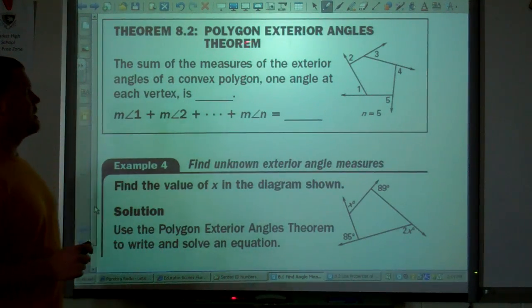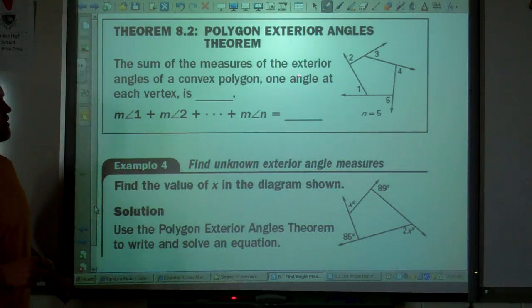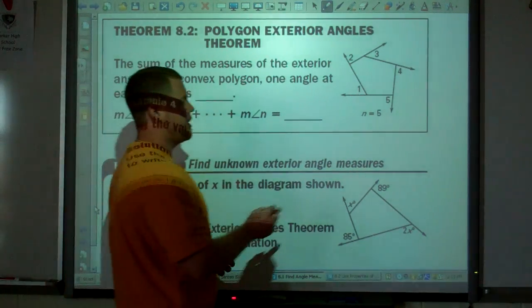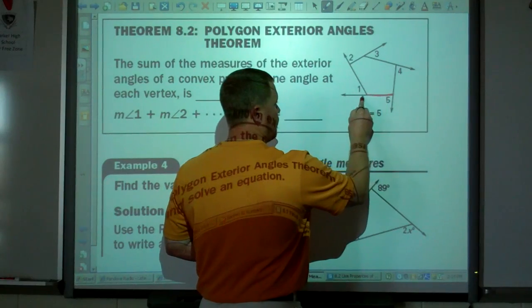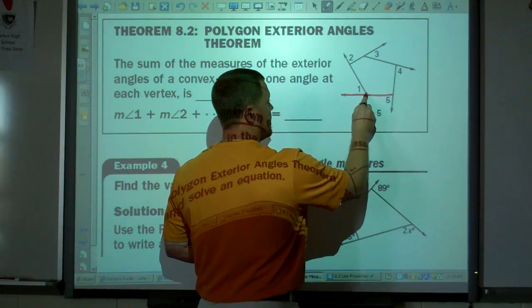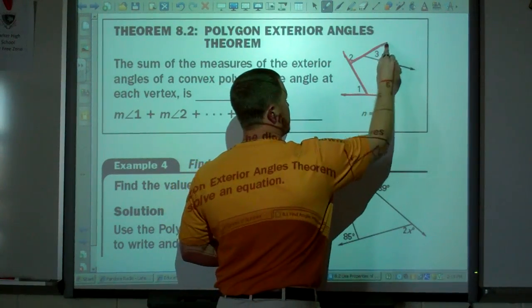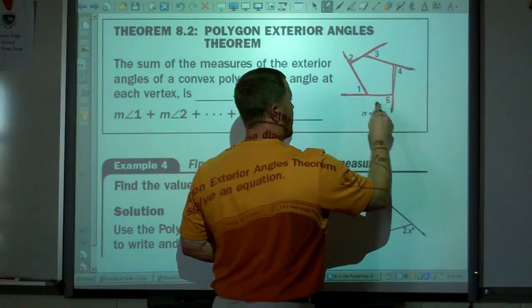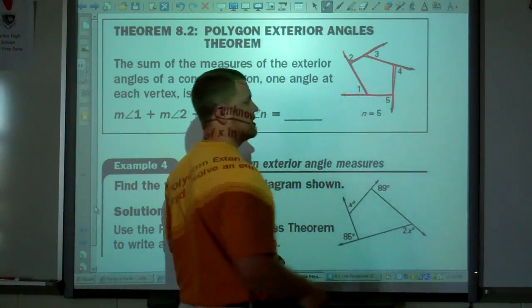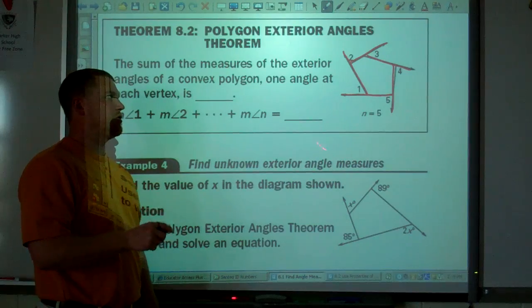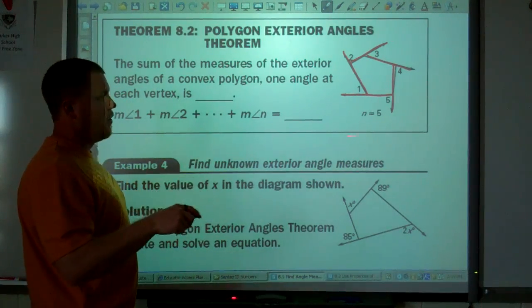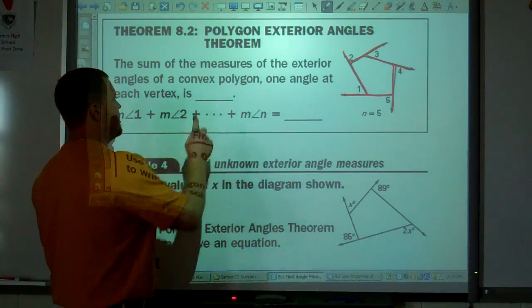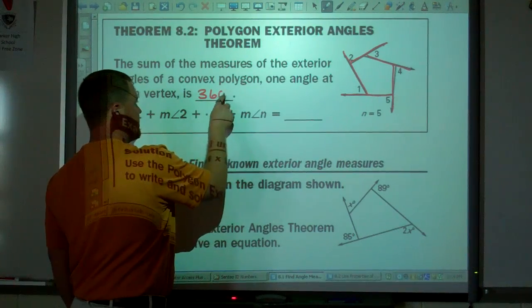Okay. Exterior angles. Exterior angle theorem. The sum of the measures of the exterior angles of a convex polygon, one angle at each vertex. And you get an exterior angle by extending each side in one direction. Extend each side in one direction. And that forms, here we have a pentagon, it forms five exterior angles.